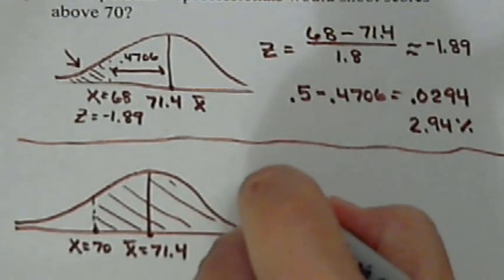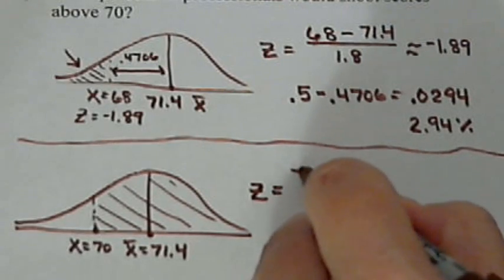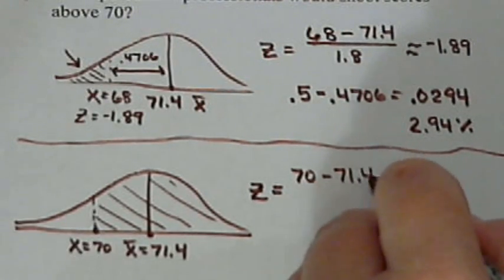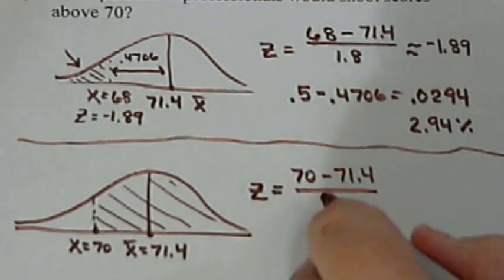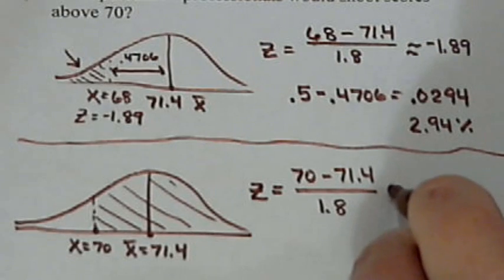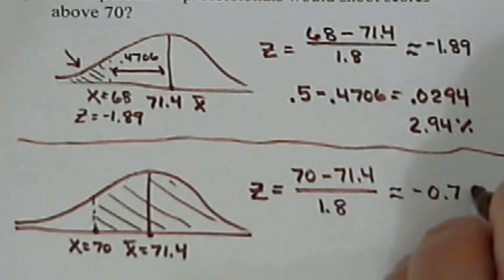Well, just like above, we start off by calculating a Z value. So our Z is going to be our score 70, minus 71.4, all over 1.8. And this calculates out to negative 0.78.